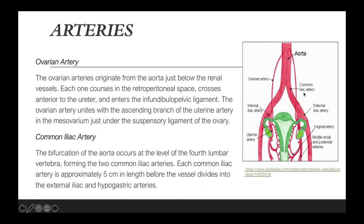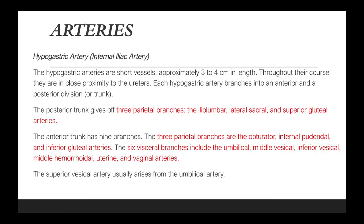The bifurcation of the aorta occurs at the level of the fourth lumbar vertebra, forming the two common iliac arteries. Each common iliac artery is approximately 5 cm in length before dividing into an external iliac artery and an internal iliac artery. The internal iliac artery is also called the hypogastric artery. These are short vessels approximately 3 to 4 cm in length and throughout their course they are in very close proximity to the ureters. Each hypogastric artery branches into an anterior and a posterior division.